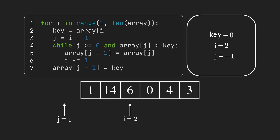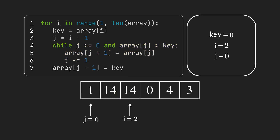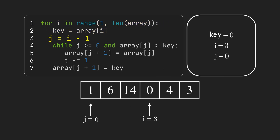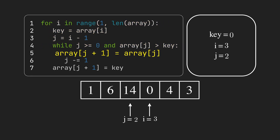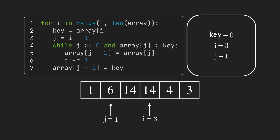We start to iterate on the sorted section. 14 is greater than 6, so we copy it to the right and decrease j. 1 is not greater than 6, so it exits the while loop and copies the key to index 1. Now 1, 6, and 14 are in order. We continue this until inserting the last item in its correct position.